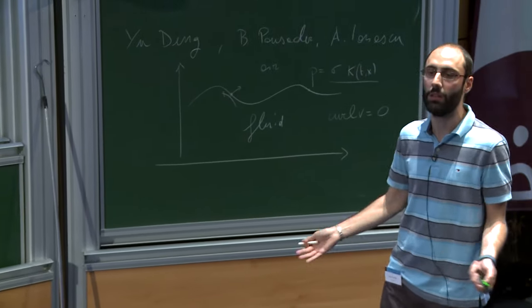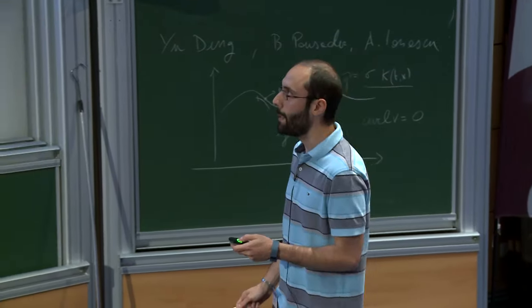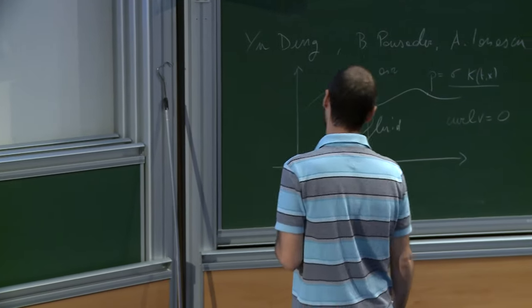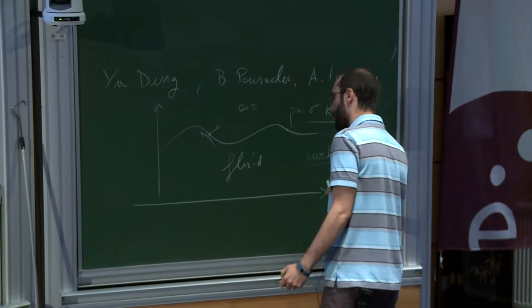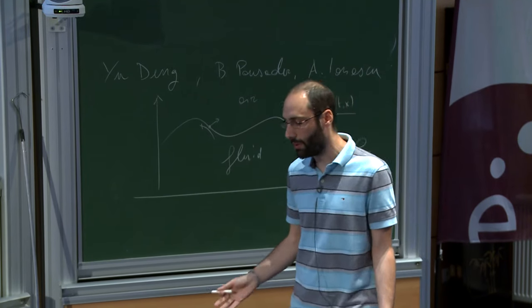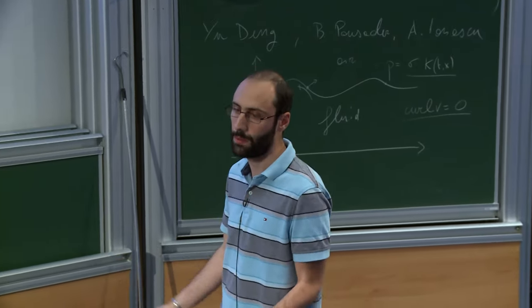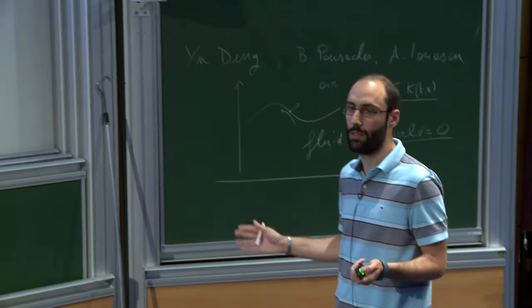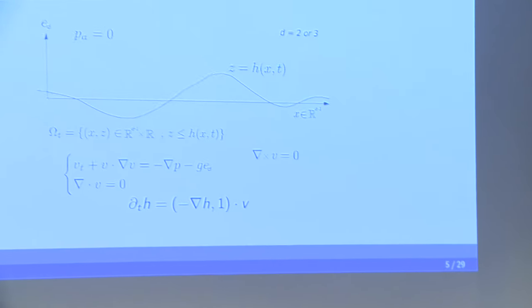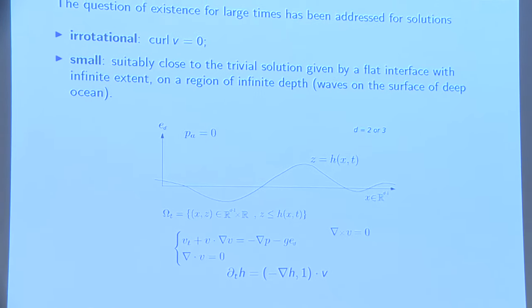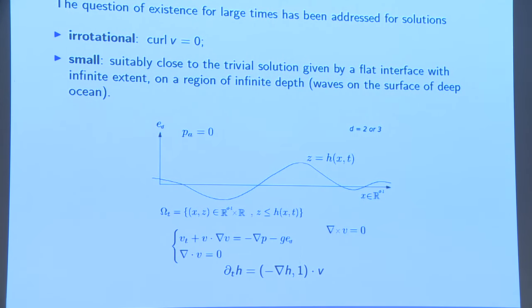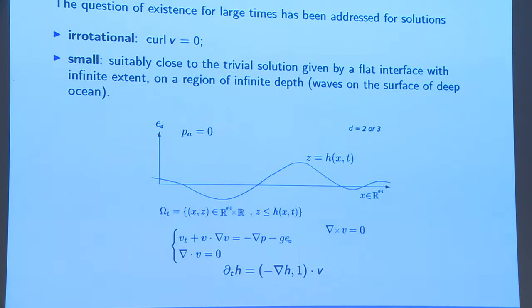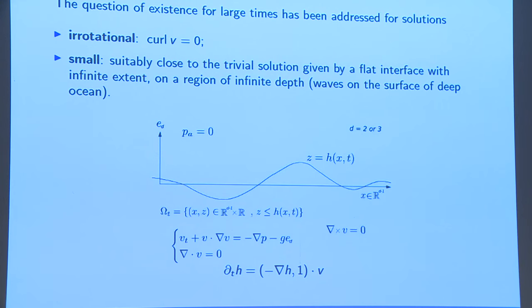In two dimensions, vorticity is transported, so in principle it won't grow, but it will definitely be a component that doesn't decay. The idea is that if you want to control the solution for long times, things have to decay, and having a component that does not could be a big problem. So far, irrotationality has been assumed, but maybe in the future something can be done in two dimensions.